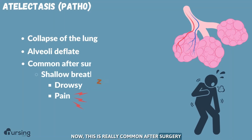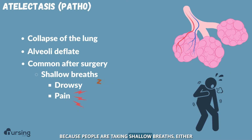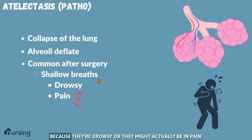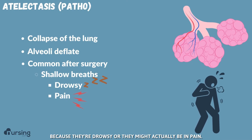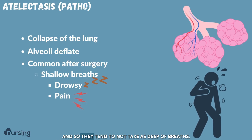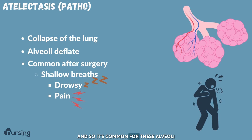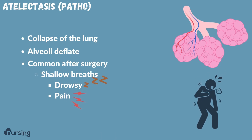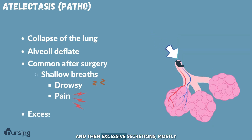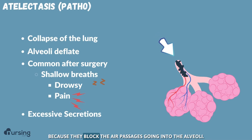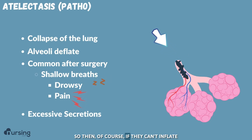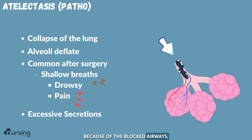This is really common after surgery because people are taking shallow breaths, either because they're drowsy or they might actually be in pain, so they tend to not take as deep of breaths. And so it's common for these alveoli to not inflate all the way. Excessive secretions can also cause it, mostly because they block the air passages going into the alveoli — if they can't inflate because of the blocked airways, then they're going to deflate.